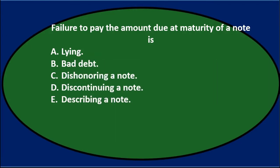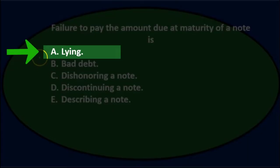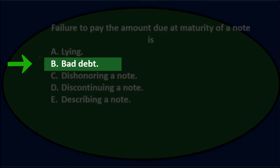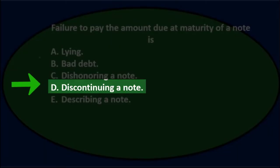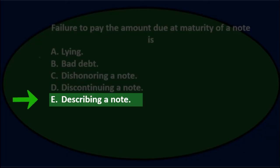First question: Failure to pay the amount due at maturity of a note is — A. Lying, B. Bad debt, C. Dishonoring a note, D. Discontinuing a note, or E. Describing a note.